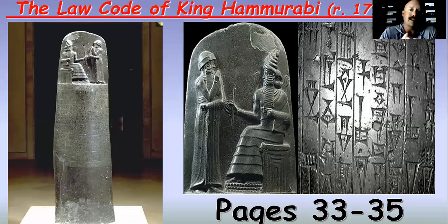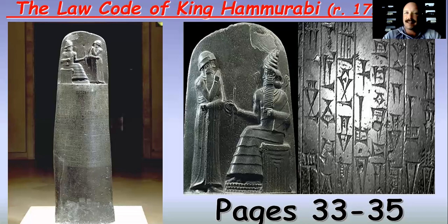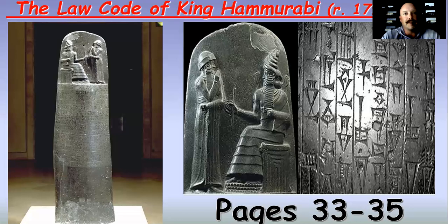Hammurabi's code has social law, marital law, agricultural law, and medical malpractice law — all kinds of effects you wouldn't expect in a society 3,000 years ago. It's a very interesting part of Mesopotamian society and a very interesting part of our course. I hope you've enjoyed our walkthrough of Mesopotamia and the notes for chapter two. As always, I have enjoyed talking with you, and I'll see you real soon.